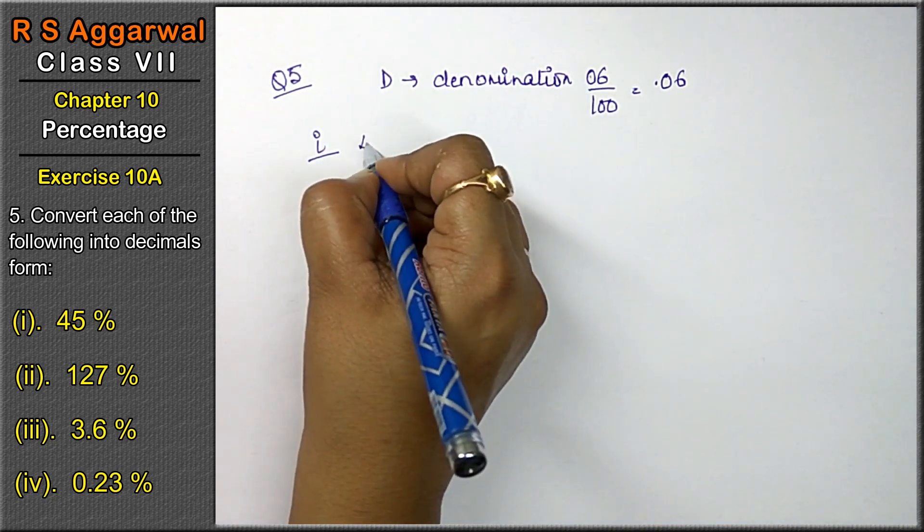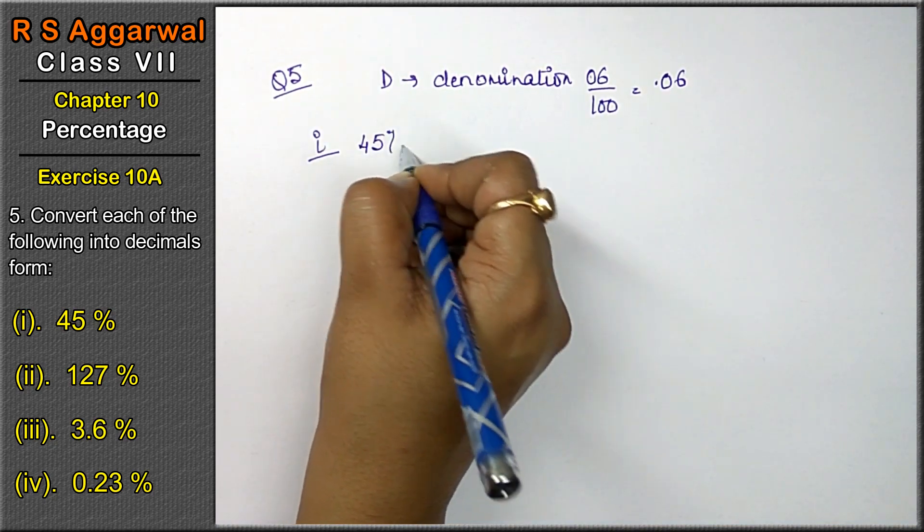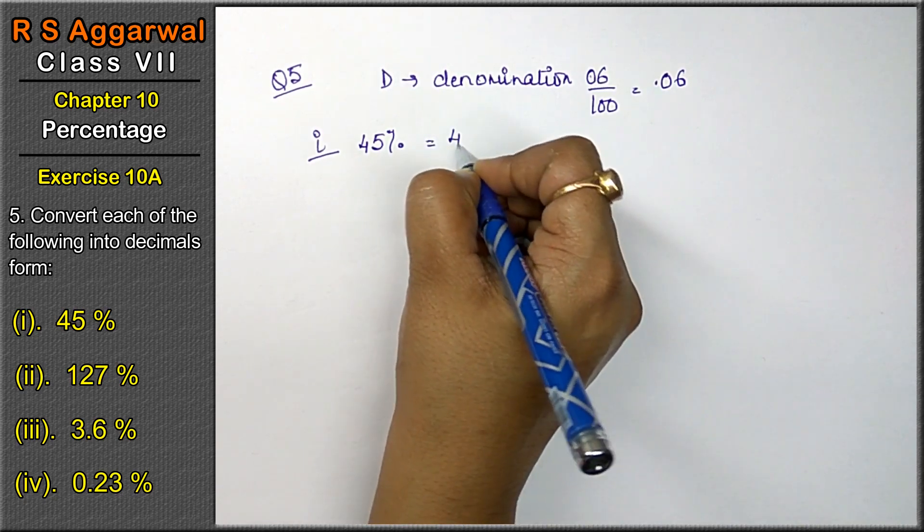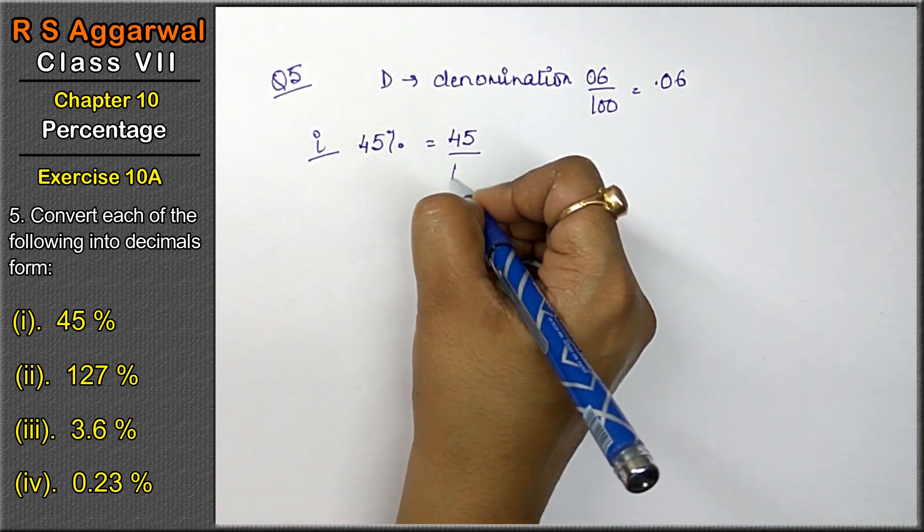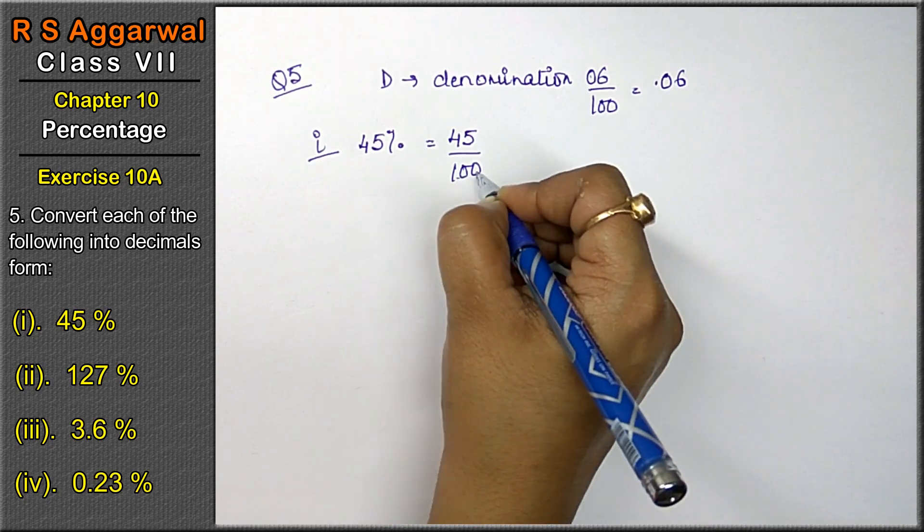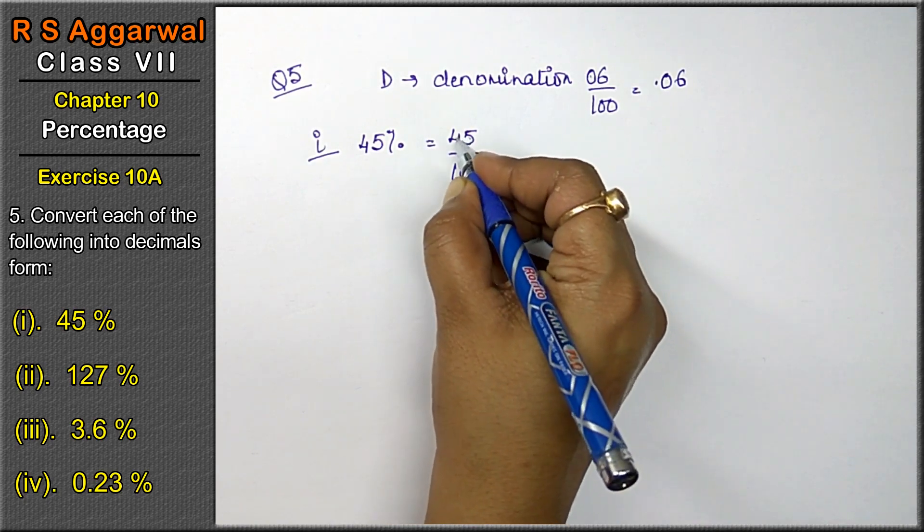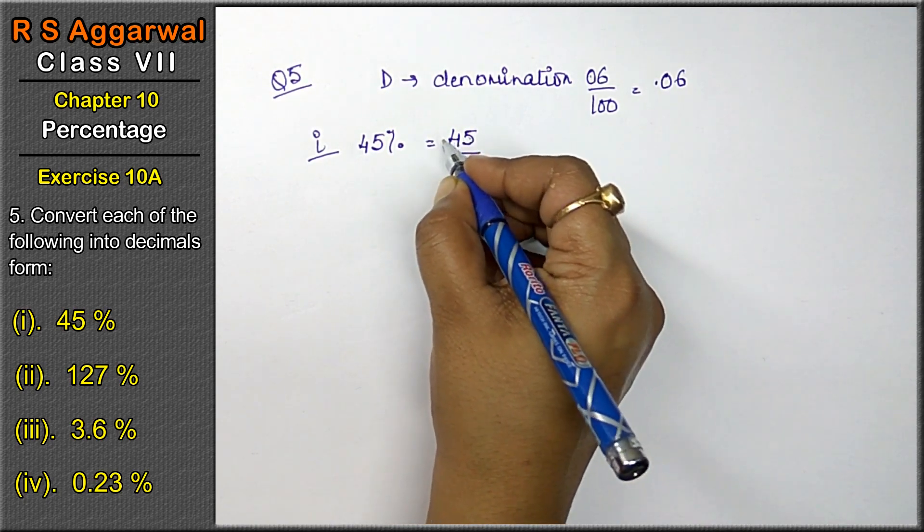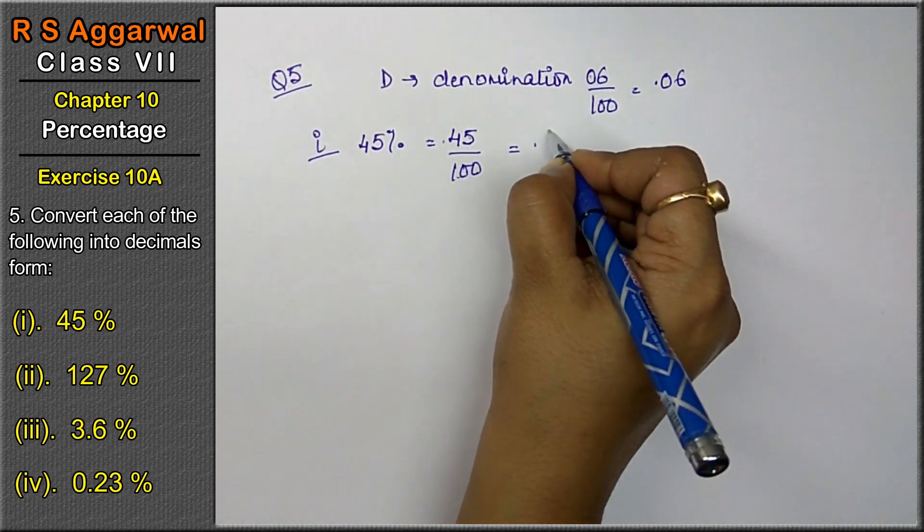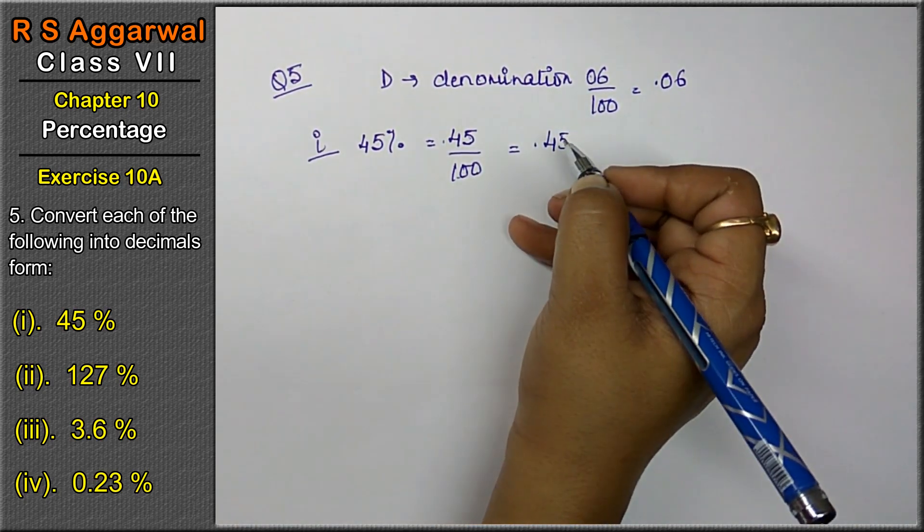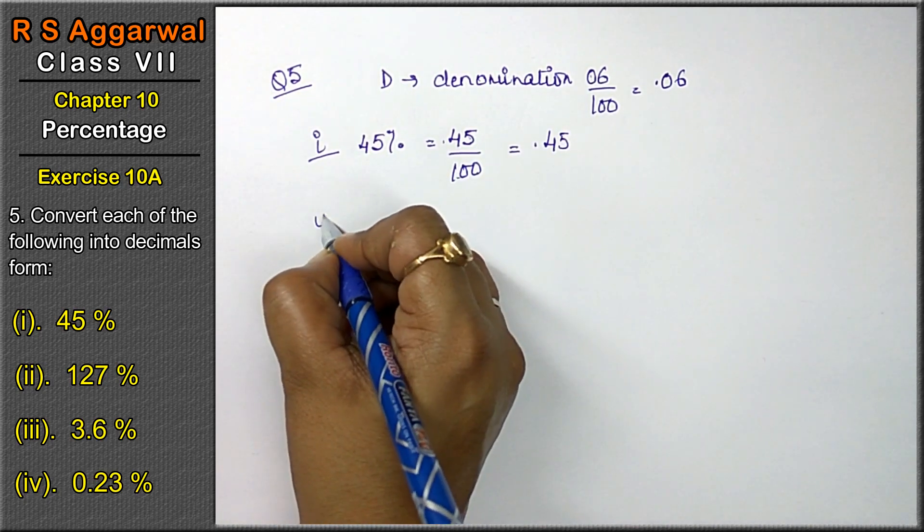First part is 45%. 45% can be written as 45 upon 100. Now how many zeros in denominator? 2 zeros. So after 2, before the 2, zero will come, that means 0.45 is the answer.